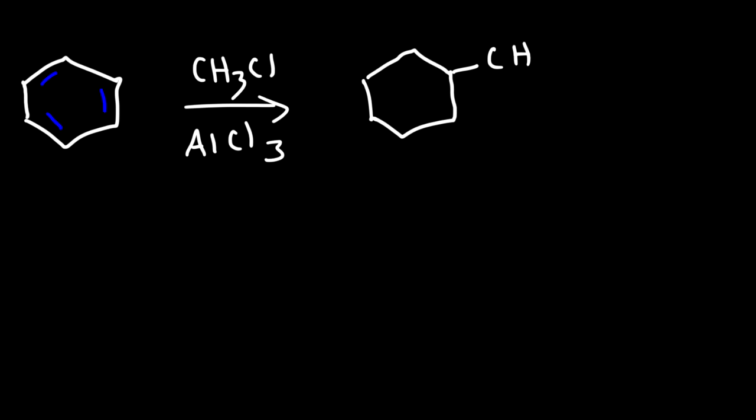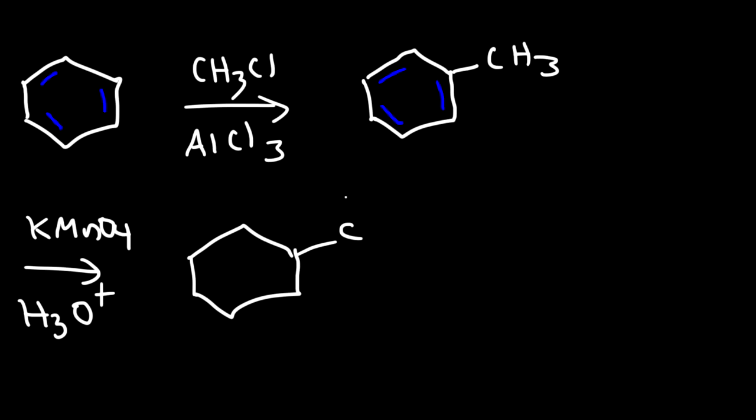Now what about making benzoic acid? How can we do that? One way is that we can react the benzene ring with methyl chloride using an aluminum chloride catalyst. This is the Friedel-Crafts alkylation reaction. And this is a simple way to make toluene. And then once we have that, we can use a strong oxidizing agent like potassium permanganate under acidified conditions with heat. And that will oxidize the methyl group into a carboxylic acid. And so that's a simple way in which we can make benzoic acid.